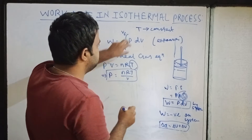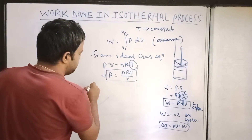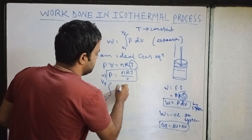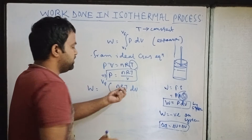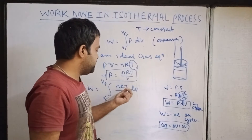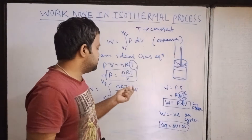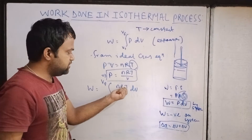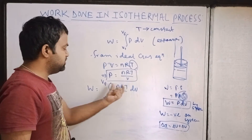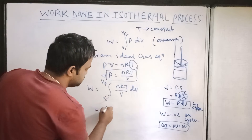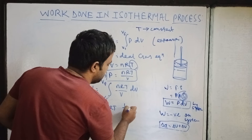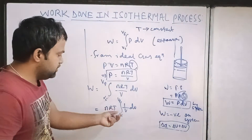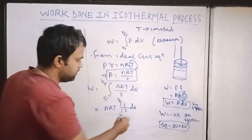If we want to write P in terms of volume, then P equals nRT divided by V. Substituting this into the work integral, W equals the integral from VI to VF of (nRT / V) dV. For the isothermal case, T is constant — unlike the adiabatic case. Since n, R, and T are all constants, we can take nRT outside the integral, leaving the integral of (1/V) dV from VI to VF.